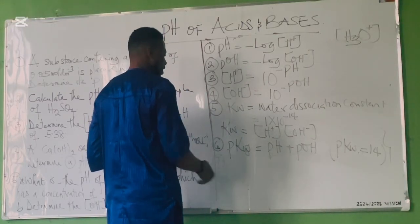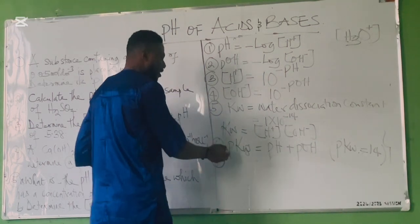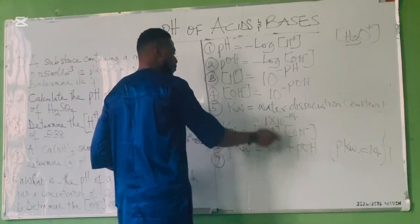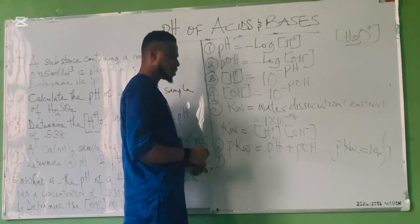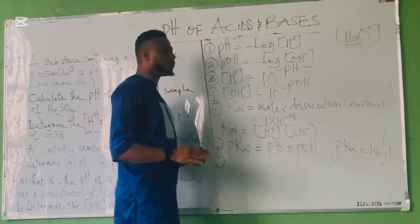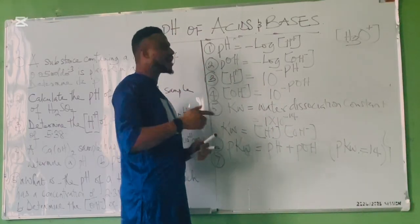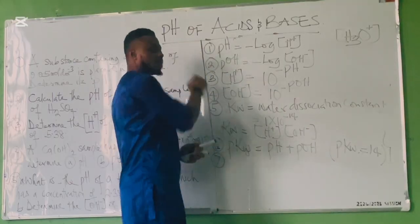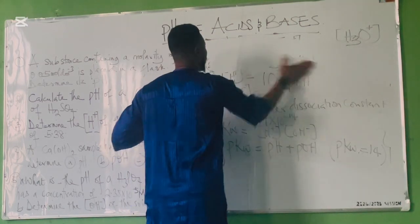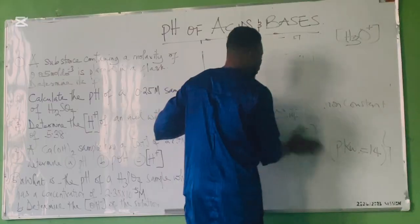We have pKw here. If we have our pH, we can rearrange since pKw = pH + pOH = 14, so pOH = pKw − pH = 14 − pH. These are the major formulas that will enable you to primarily understand the basic knowledge of acids and bases as regards the determination of pH. Now let us go straight to answering the questions.